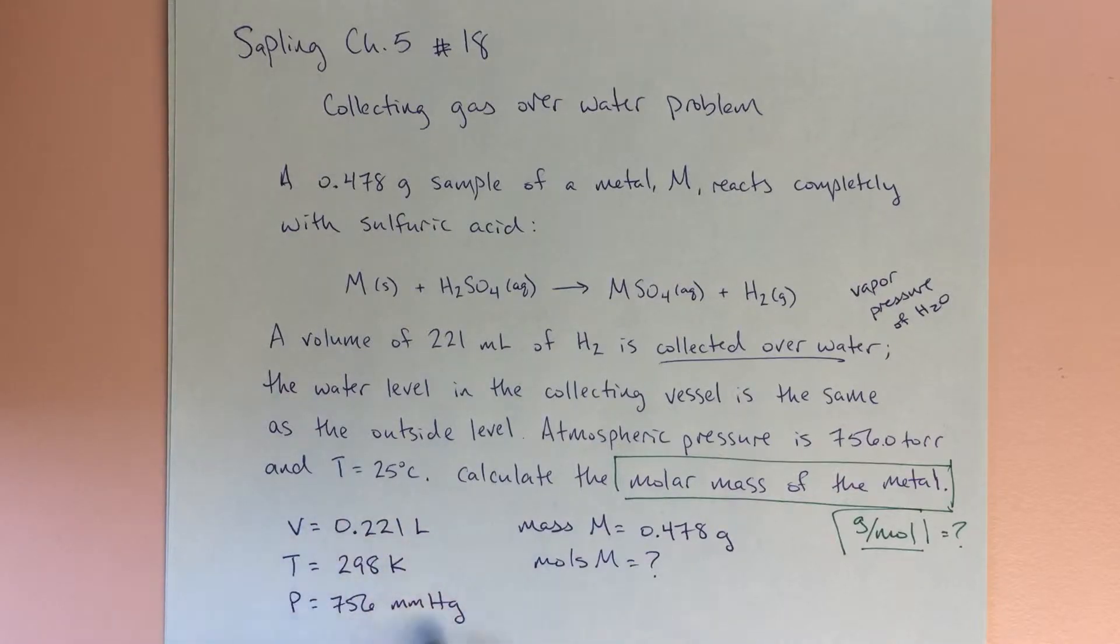You can see I've tabulated my, or organized my data. So I changed the volume to liters, because I know that we'll probably be using PV equals nRT. We want to be using liters. Temperature, convert that to Kelvin as well. And my pressure, I've left in millimeters of mercury for now, and that's because I knew that we'll need to take into account this vapor pressure.